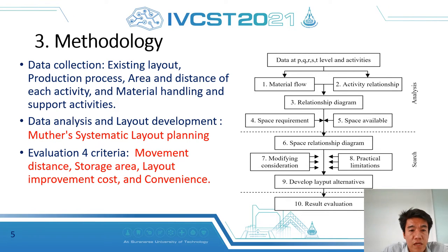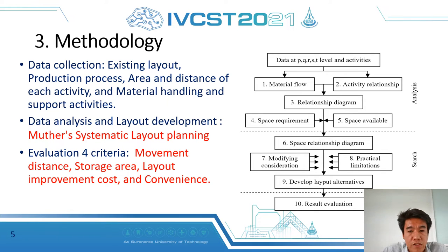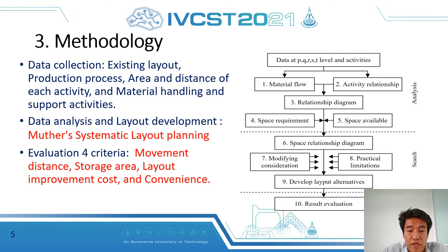We then study the needs of the activity area and compare them with the available space. We then decide the relationship chart adjusted by the actual area limitations such as the door position. After that, we develop three proposed layouts, and finally evaluate each layout by weighted average using four criteria.